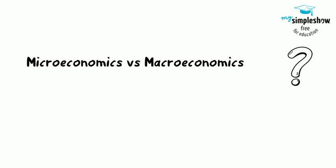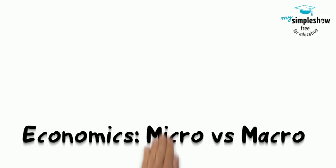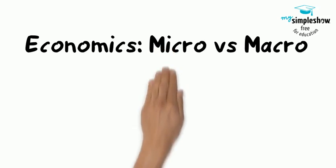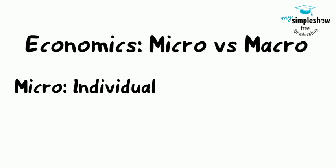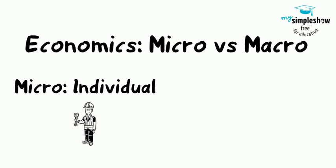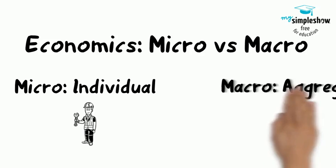What is the difference between microeconomics and macroeconomics? We can divide economics into two parts. Microeconomics focuses on the actions of individual agents within the economy, like households, workers, and businesses.